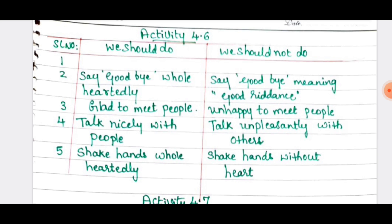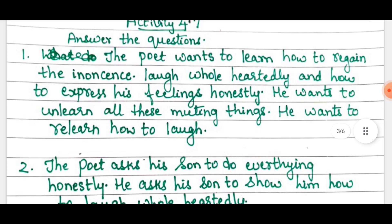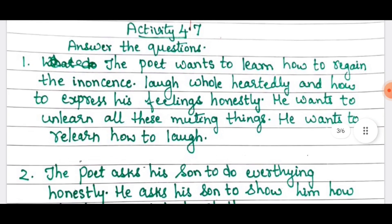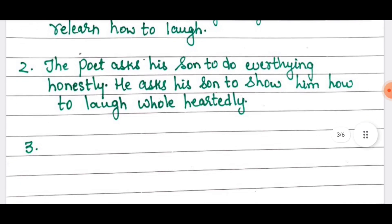Next is activity 4.7. Read and answer questions based on the complete poem. First answer: the poet wants to learn how to regain innocence, laugh wholeheartedly, and express his feelings honestly. He wants to unlearn all these muting things and relearn how to laugh. Second answer: the poet asks his son to do everything honestly and show him how to laugh wholeheartedly.